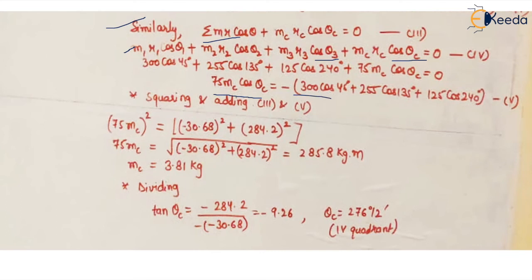We are going to square and add these two equations. When you square and add these two equations, on LHS it is 75 mc whole square and cos square theta plus sine square theta which eventually becomes 1, so we have not written that factor. If you calculate this value and calculate the value for the sine factor, we get these two values.